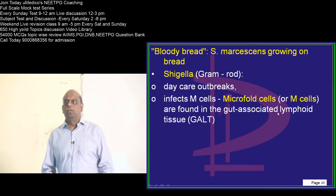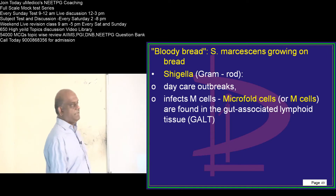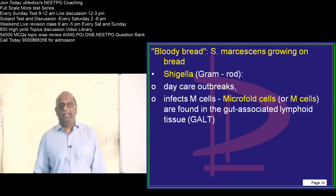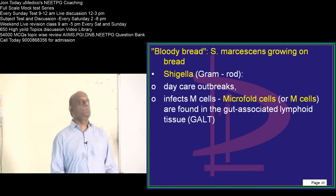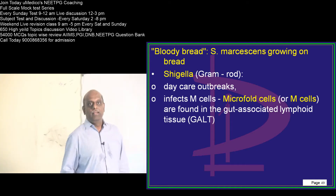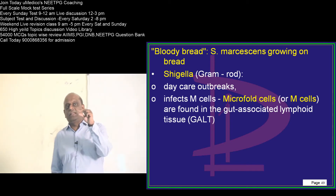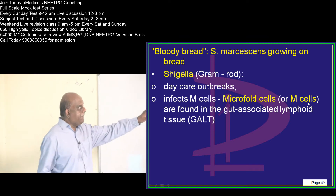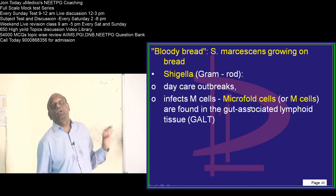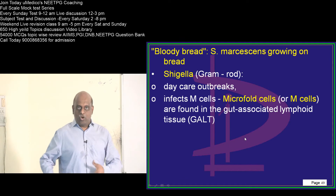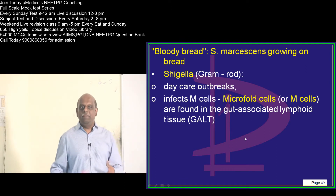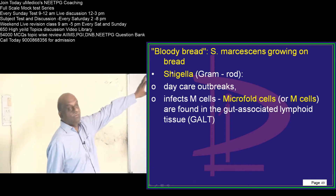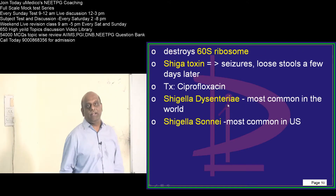Now, Shigella. Lot of daycare centers — whenever there is any outbreak of dysentery, it is Shigella which is implicated. What are those cells that Shigella goes and infects or attacks? They are called M cells, also called microfold cells. It is in the GALT — the gut-associated lymphoid tissue — where you find the M cells, which Shigella has affinity for.